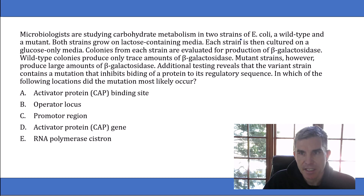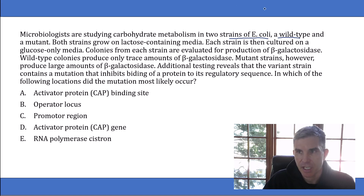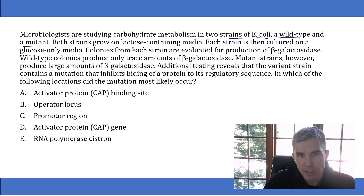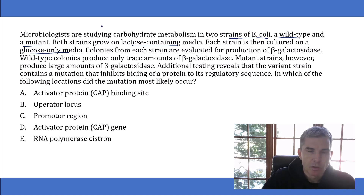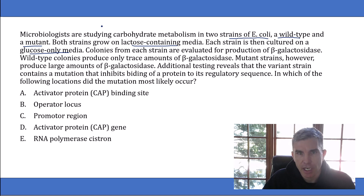There are two strains of E. coli: a wild type, which is the term we use for the normal type of bacteria found in nature, and a mutant form. They tell you both strains grow on lactose-containing media, and then each strain is cultured on a glucose-only media. When you hear about E. coli growing on lactose or glucose media, you should right away think of the lac operon — that's what this question is testing.